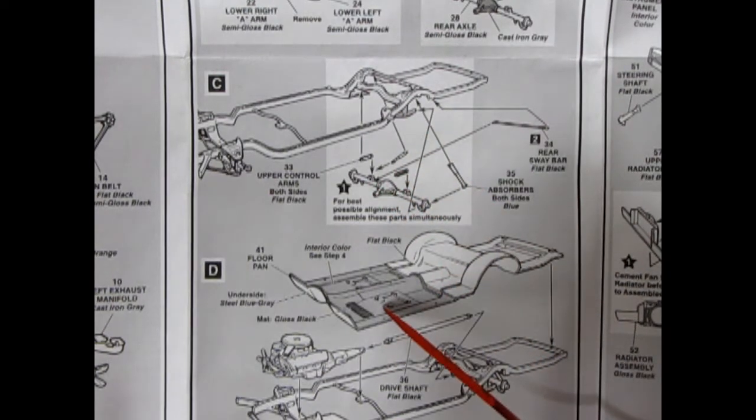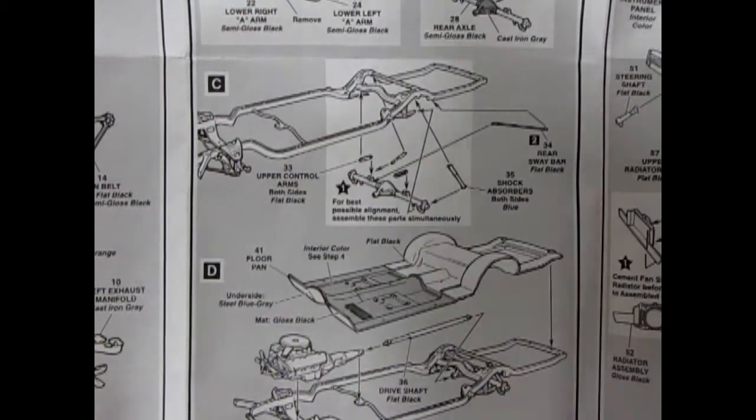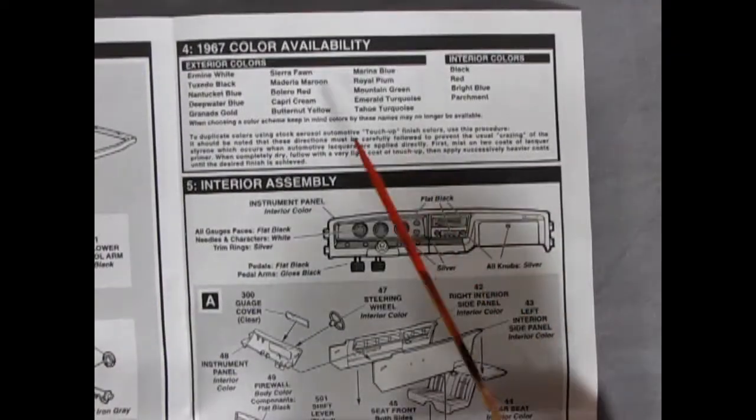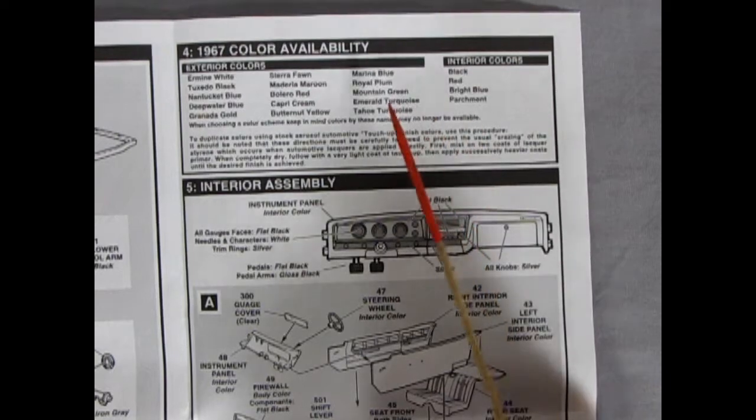You've got your frame and the differential and all that going in. You also have your floor pan here, your engine, the drive shaft, everything. Then here we get a nice chart. This is the color availability, the exterior colors and what would be painted on the interior.